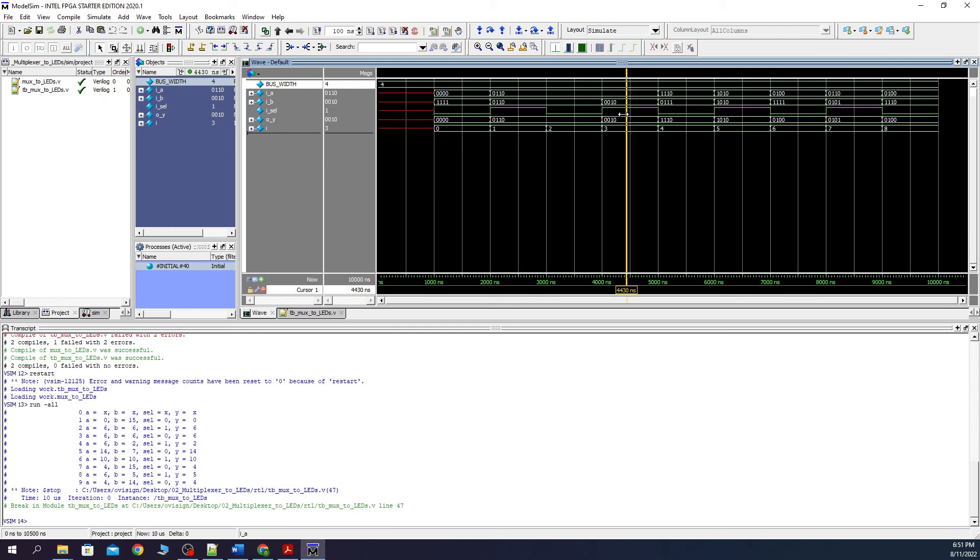Next here it selects the value of b. Here the value of a again. And so on. So this is how a multiplexer works. It is a very simple circuit that switches the value of the output according to the select bus.